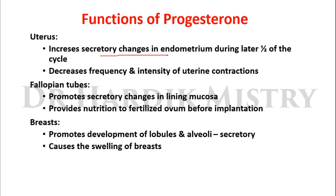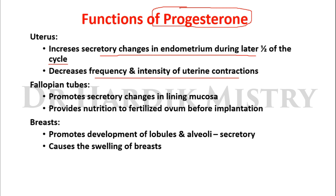Functions of progesterone on the uterus: it increases secretory changes in the endometrium during the latter half of the menstrual cycle and decreases the frequency and intensity of uterine contractions. Progesterone is the hormone that promotes pregnancy and favors implantation of the fertilized ovum on the walls of the uterine cavity. In the fallopian tubes, it promotes secretory changes in the lining mucosa and provides nutrition to the fertilized ovum before implantation.